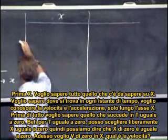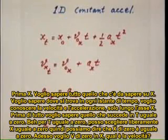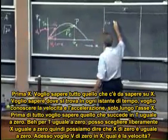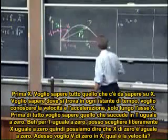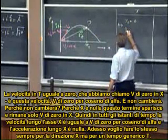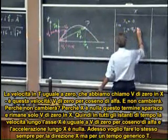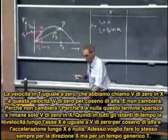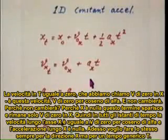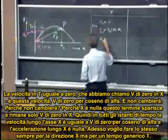First, I want to know the x quantities at t equals zero. At t equals zero, x zero — I can choose that to be zero, so x zero equals zero. Now I need V zero x. The velocity at t equals zero, which we call V zero x, is V zero cosine alpha, and it is not going to change. Why? Because there is no acceleration in x, so that term is zero. At all moments in time, the velocity in the x direction is V zero cosine alpha, and a_x equals zero.